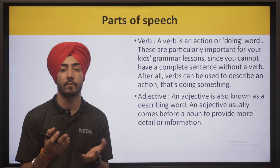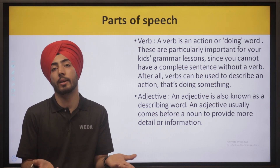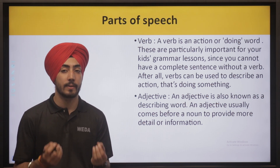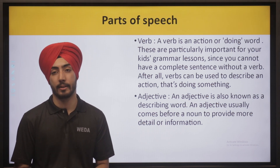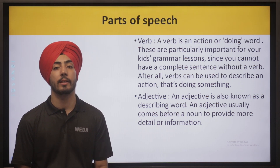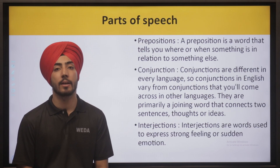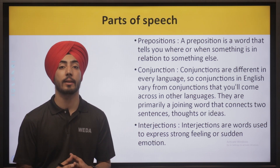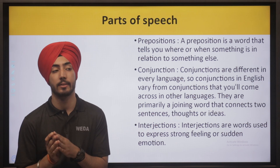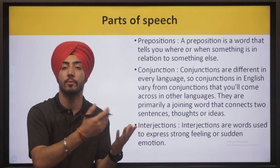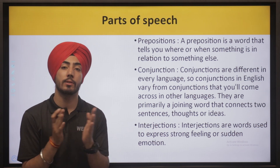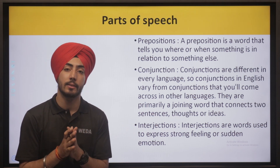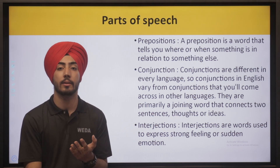If you learn the English language paper, there will be a grammar check. Adjective is also known as the describing word — it tells about the detail of a thing and usually comes before a noun to provide more detail or information. Then preposition — a word that tells you where or when something is in relation to something else. For example, 'I am going towards the office' versus 'I am going to the office' — it is telling a relation. Conjunction is used to join sentences, thoughts or ideas. Interjections express sudden emotion.